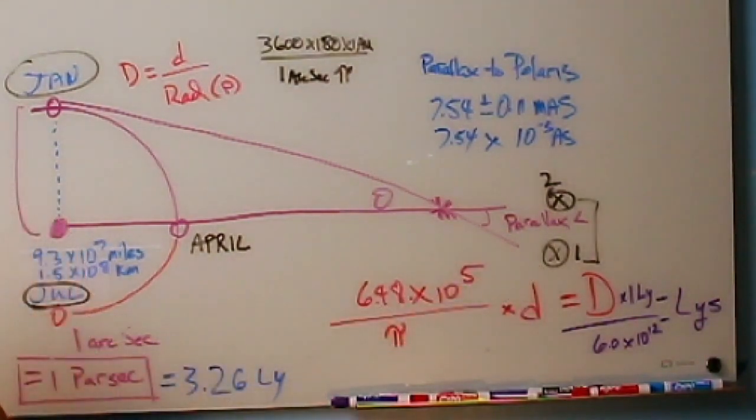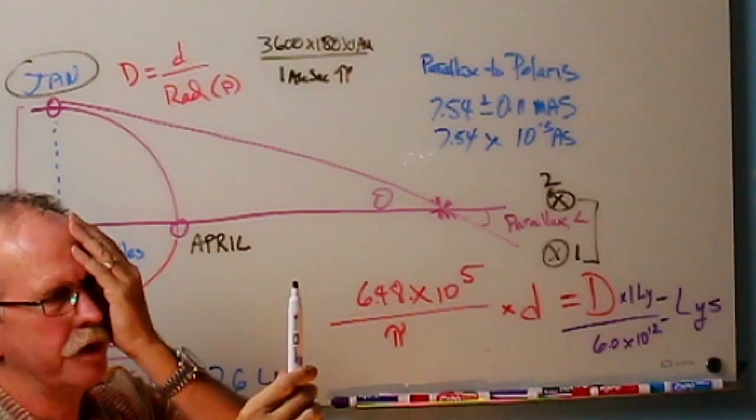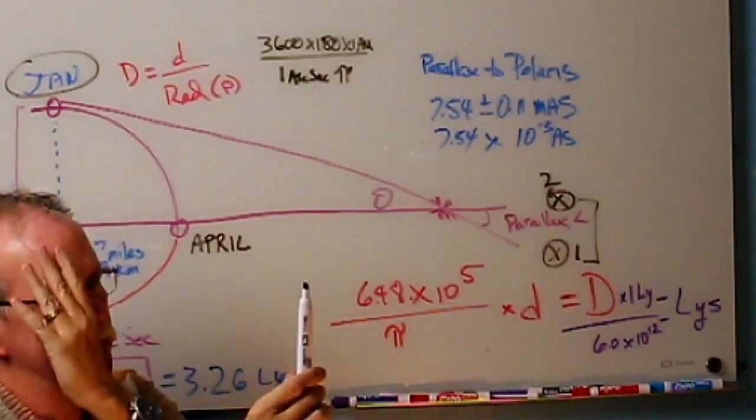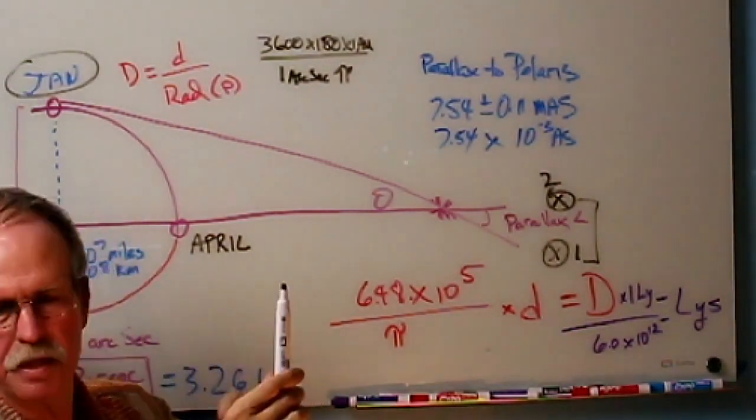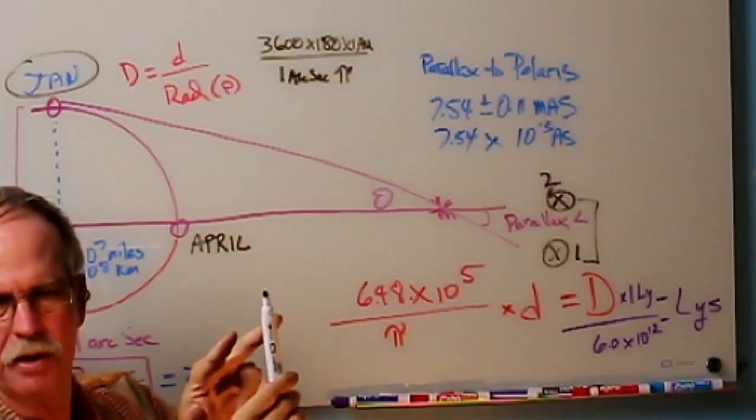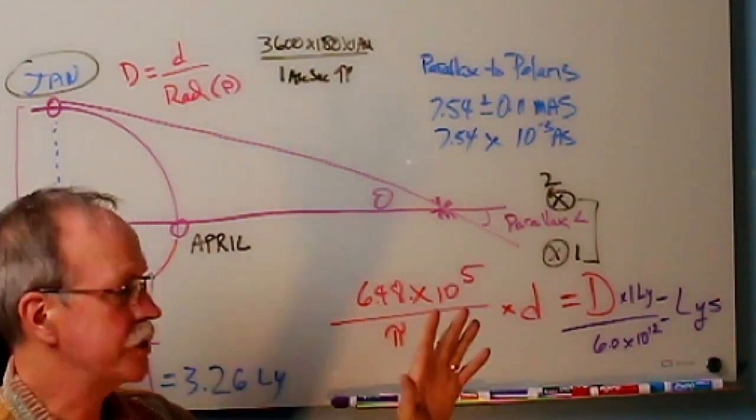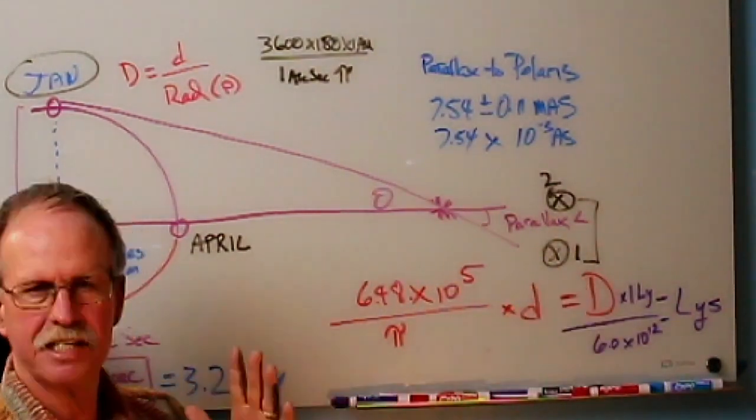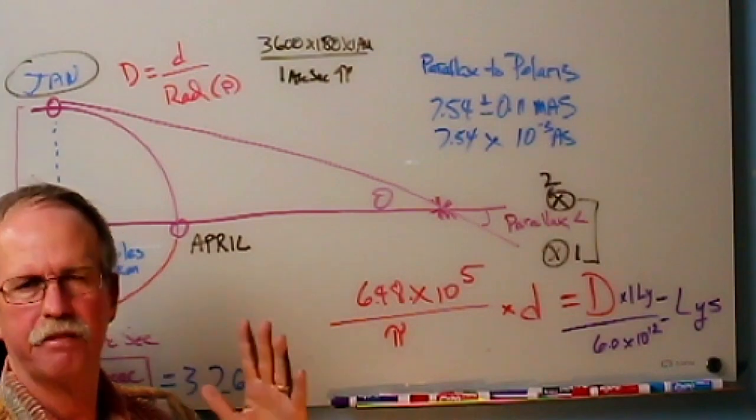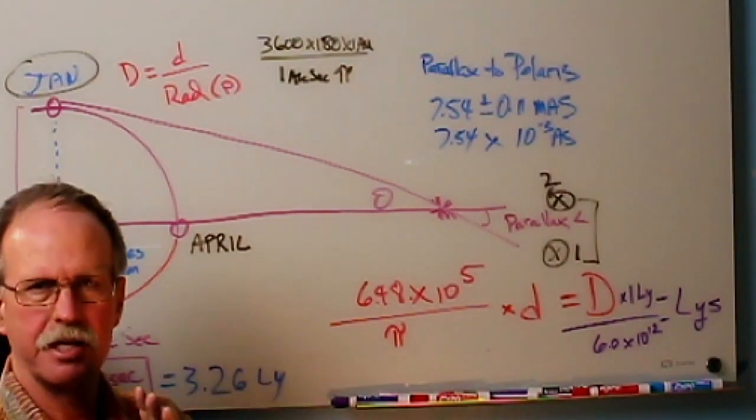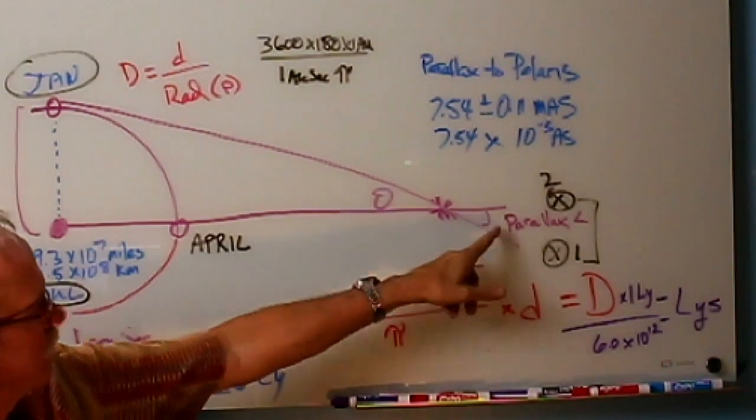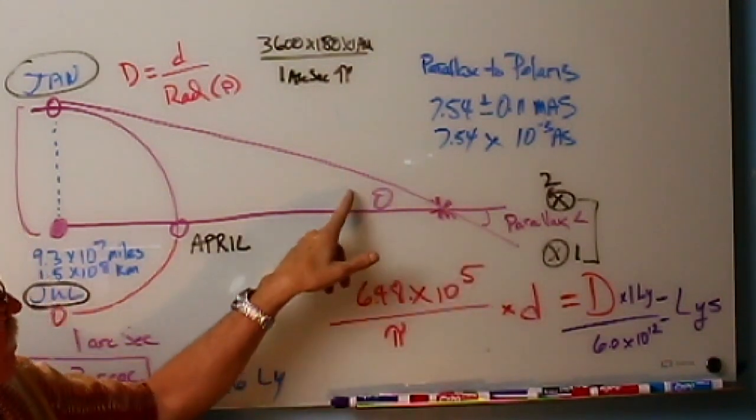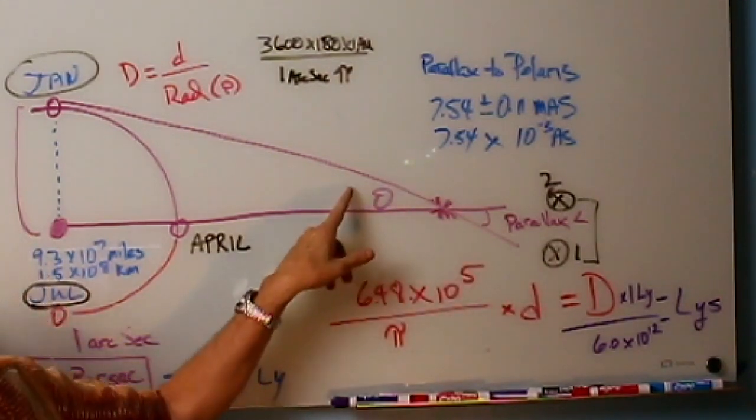The angular distance between those two stars gives us something called a parallax angle. It's very much like looking at a pen, closing one eye, and then closing the other eye, and seeing what's past the pen. We can tell that it jumps a little bit. That's what happens when we look at a star and compare it to distant stars. That star will appear to jump back and forth against the background stars.